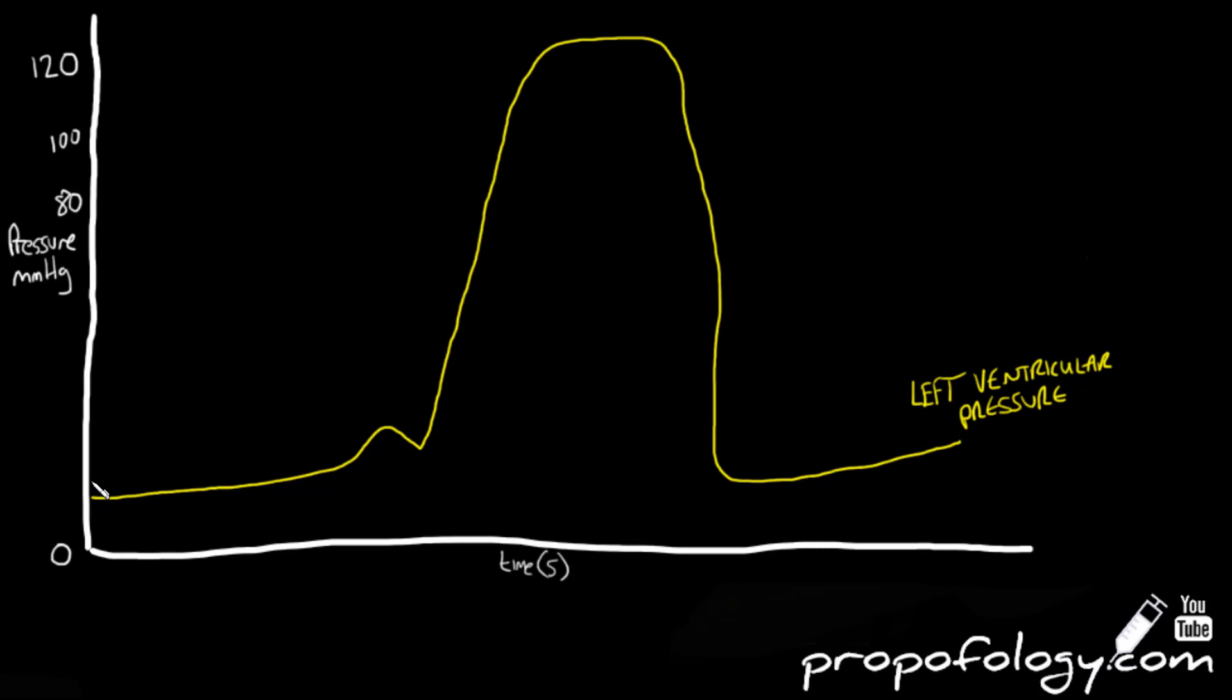As we've already said, phase 1 is atrial contraction, so we're going to plot a line of atrial pressure and that sits just above the curve of left ventricular pressure. Increasing atrial pressure from atrial contraction causes the first blip on the yellow left ventricular pressure line.